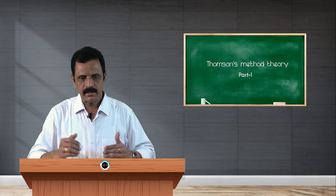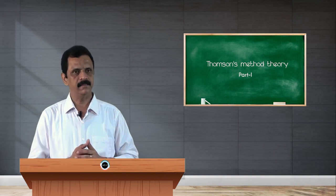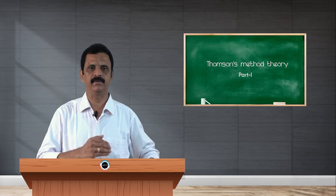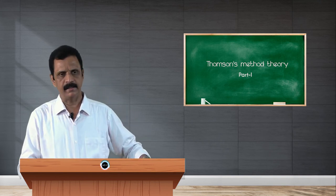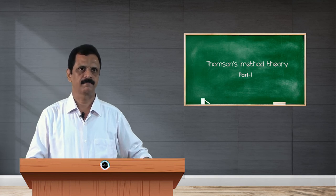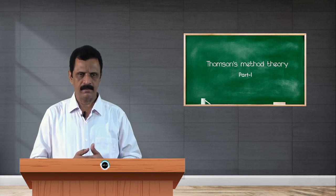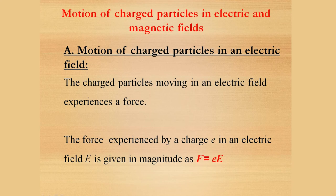So, as I already mentioned, J.J. Thomson made use of the electric field and magnetic field to determine e by m of the electrons. To understand it more clearly, now let us see the action of this electric field and action of this magnetic field on moving charges like electrons. What happens when these electrons are subjected to electric field? What happens to these electrons when they are subjected to magnetic field?